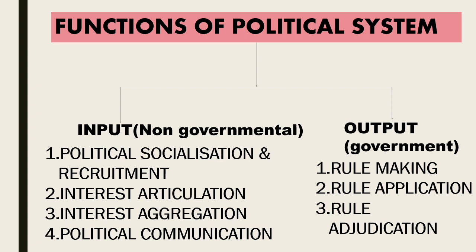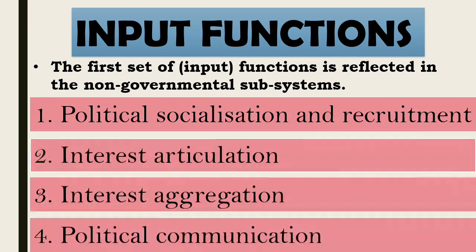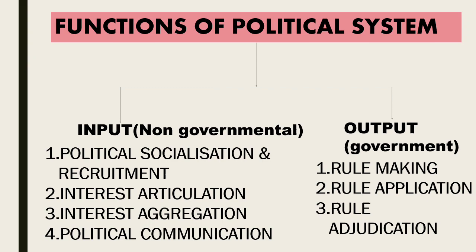Function of political system are basically of two types: input function and output function। Input functions वो functions हैं जो political system society में inculcate करता है, इसलिए input functions non-governmental subsystems में देखने को मिलते हैं। Output functions में political system society पर formally कुछ चीज़ें लागू करता है, इसलिए output functions government subsystems में देखने को मिलते हैं। Input functions are of four types: political socialization and recruitment, interest articulation, interest aggregation, and political communication। Output functions तीन प्रकार के होते हैं: rule making, rule application, and rule adjudication।